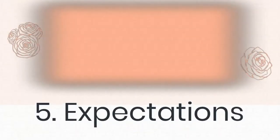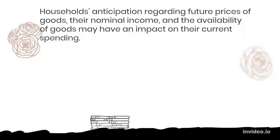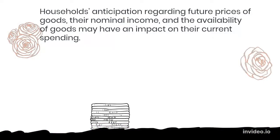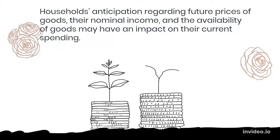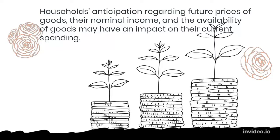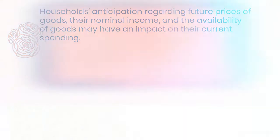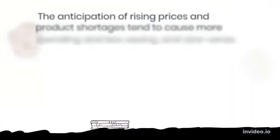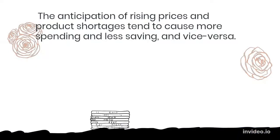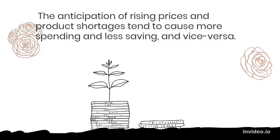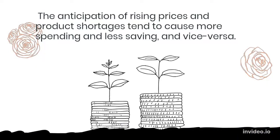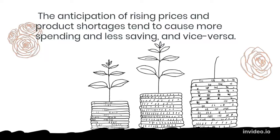Expectations: a household's anticipation regarding future prices of goods, their nominal income, and the availability of goods may have an impact on their current spending. The anticipation of rising prices and product shortages tend to cause more spending and less saving, and vice versa.